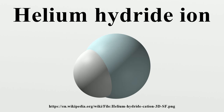The helium hydride ion is formed during the decay of tritium in the molecule HT, or the tritium molecule T₂. Although excited by the recoil from the beta decay, the molecule remains bound together. HeH⁺ is thought to exist in the interstellar medium, although it has not yet been unambiguously detected. It is believed to be the first compound to have formed in the universe, and is of fundamental importance in understanding the chemistry of the early universe.